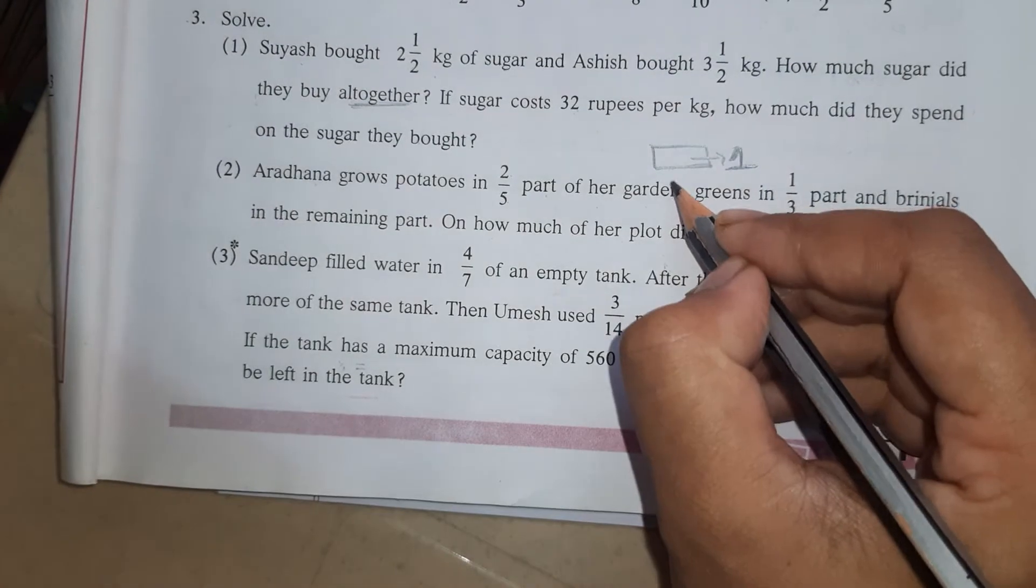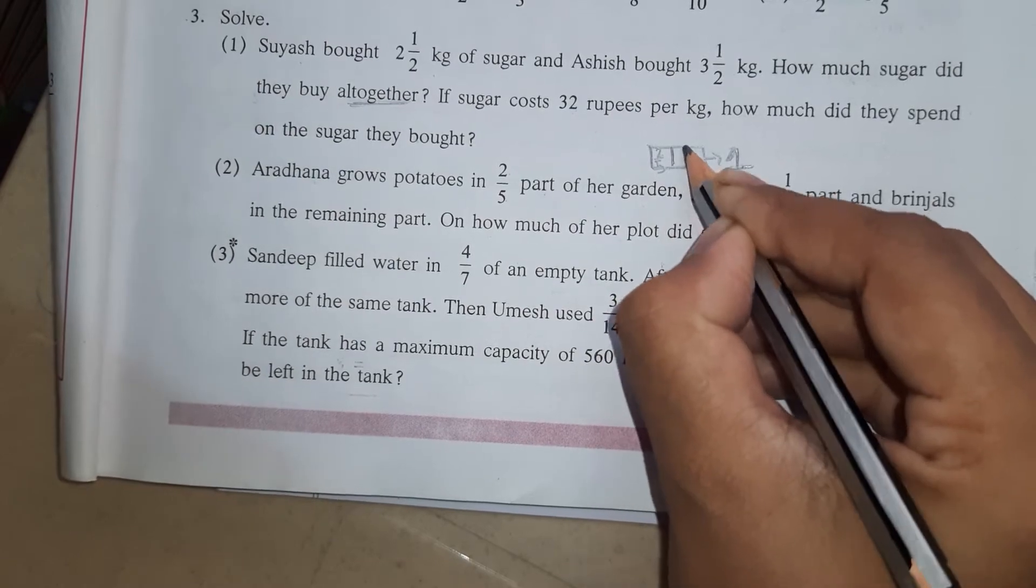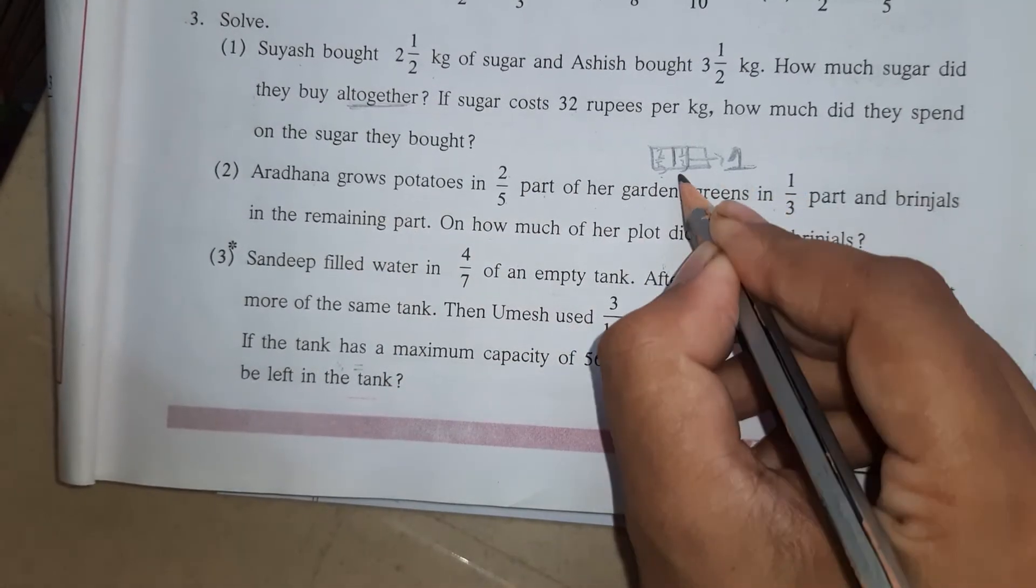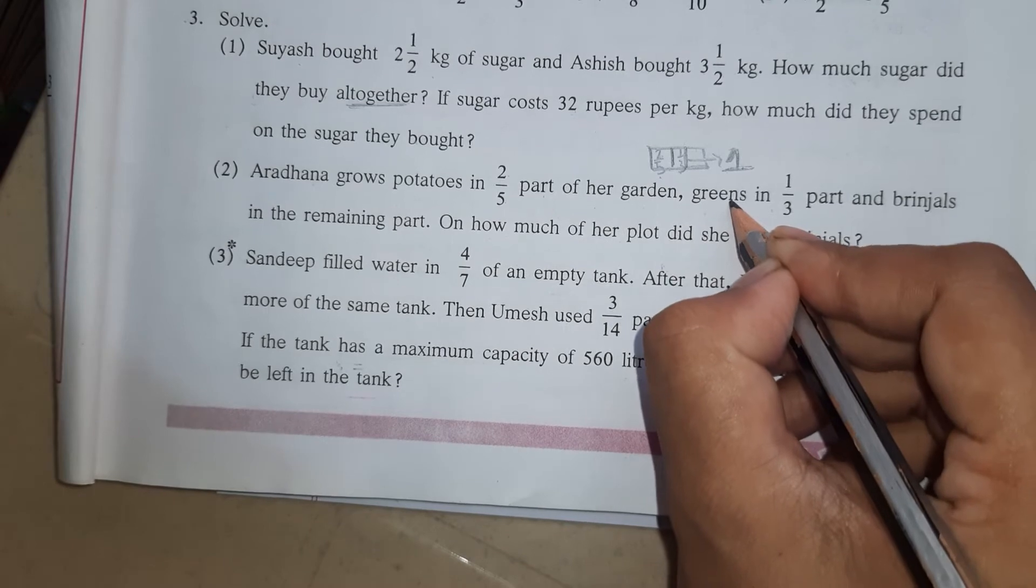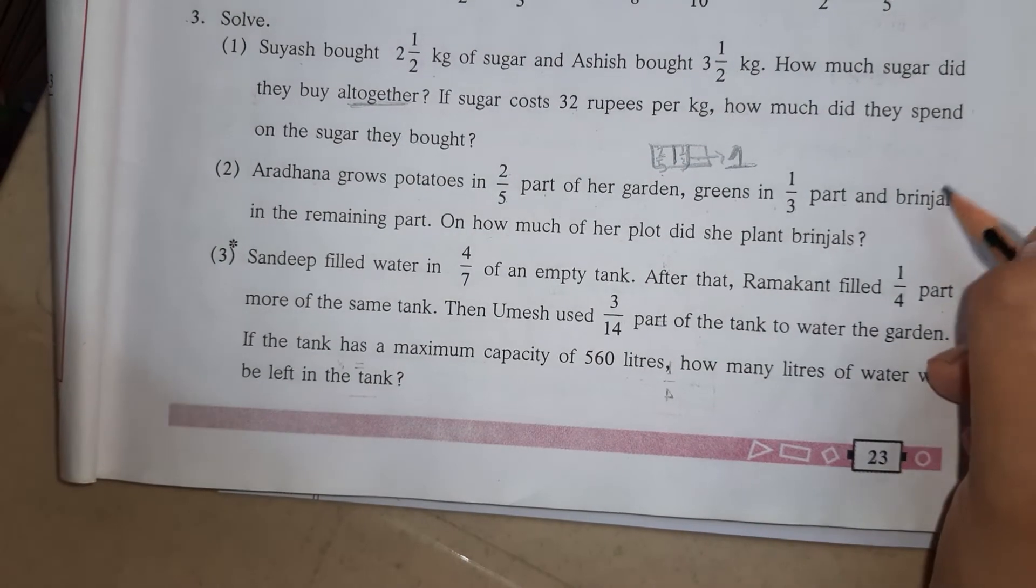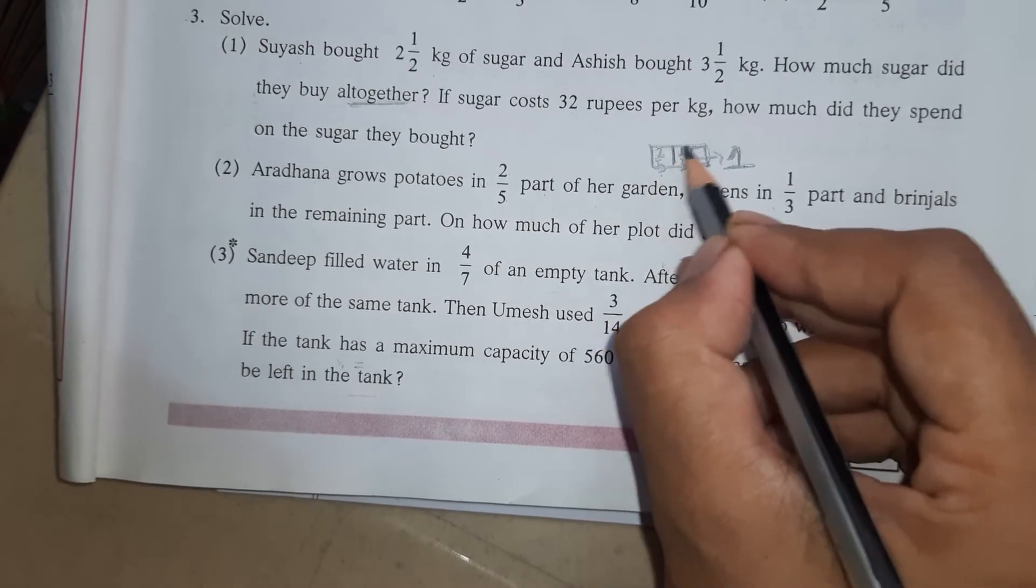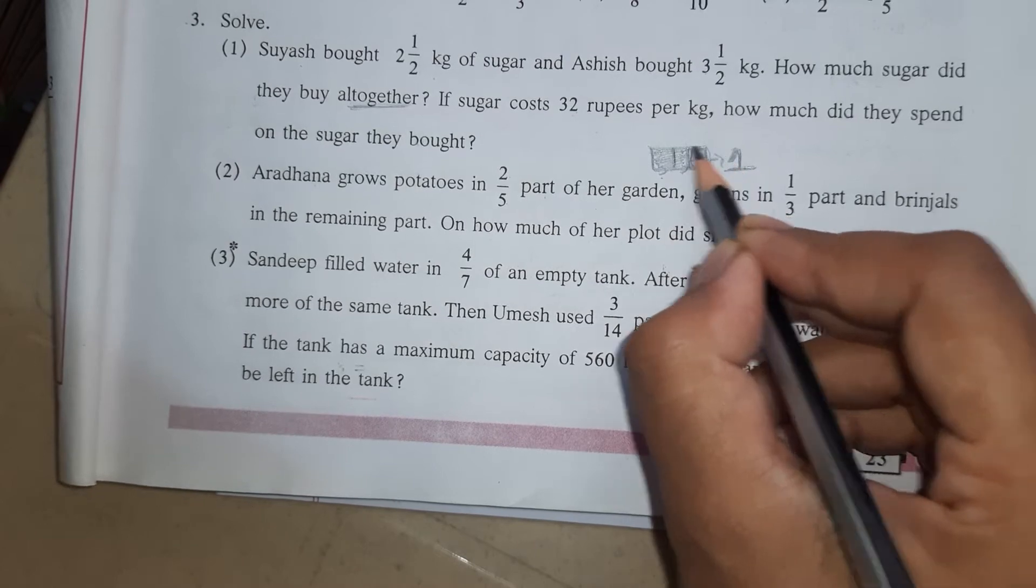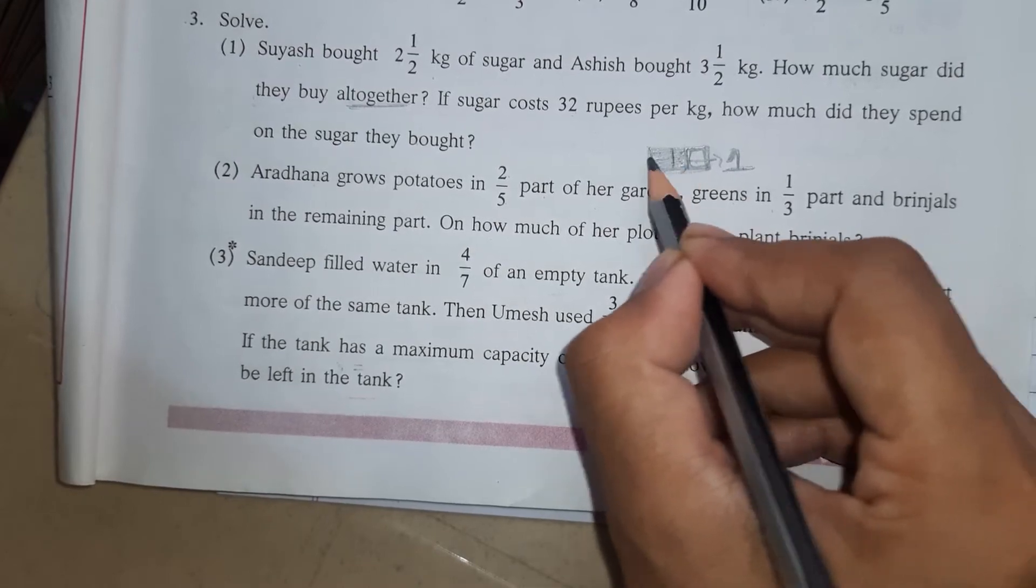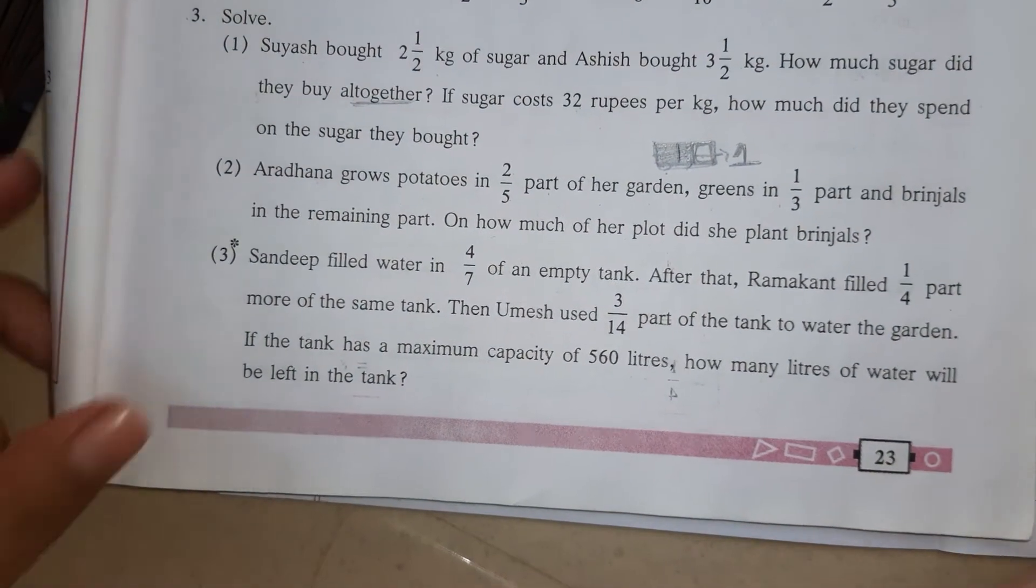Now just a rough figure we will take. Suppose this much is 2/5 part and this much is 1/3 part. So 2/5 part she is growing potatoes, 1/3 part she is growing leafy vegetables and remaining part she is growing brinjals. So how to find the part where she is growing brinjals? First we have to add these 2 parts means this much we have to take and from the whole garden we have to less this much part. We have to subtract this much part. So first we will do addition and then we will do subtraction. Understood?